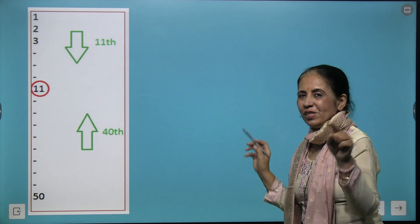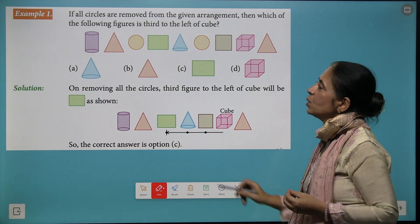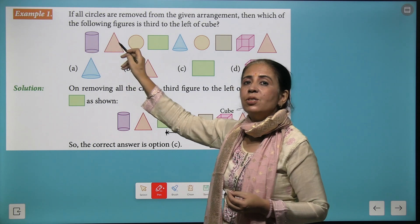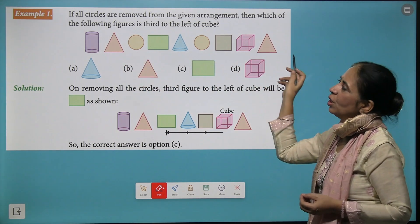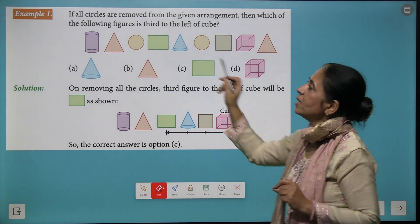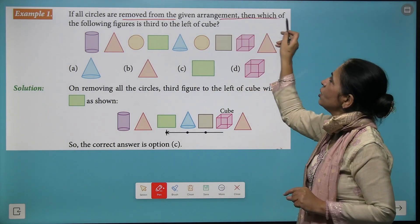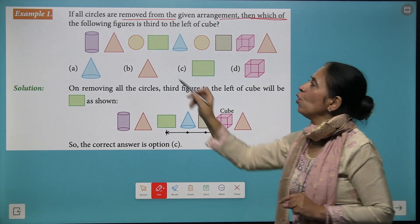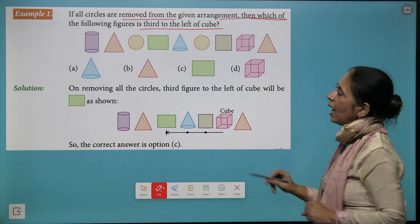Moving further, the question says here we have cylinder, triangle, circle, square, cone arranged in an order. If all the circles are removed from the given arrangement, then which figure is third to the left of the cube?